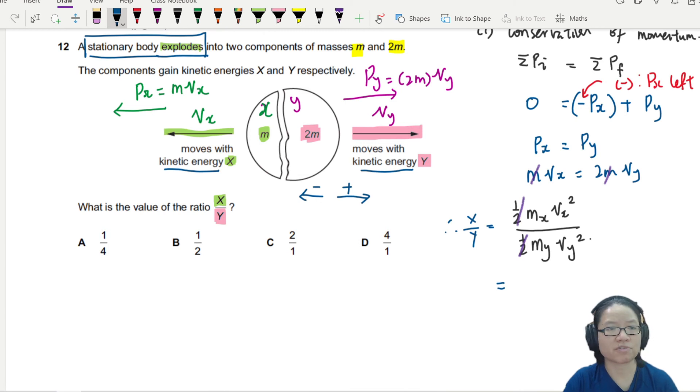And then you have mx over my. The ratio of mass of x is m. My is 2m. So the m and m is half. And that one is Vx over Vy. So from this ratio here that I just recently derived, this one. If I want to find Vx over Vy.